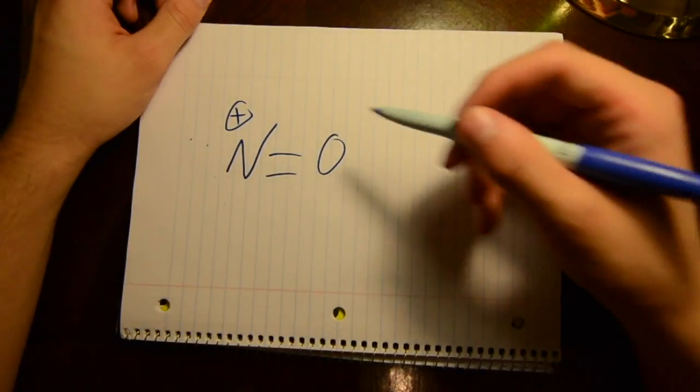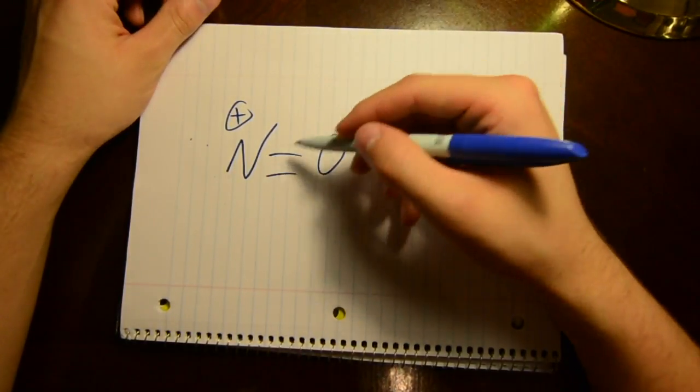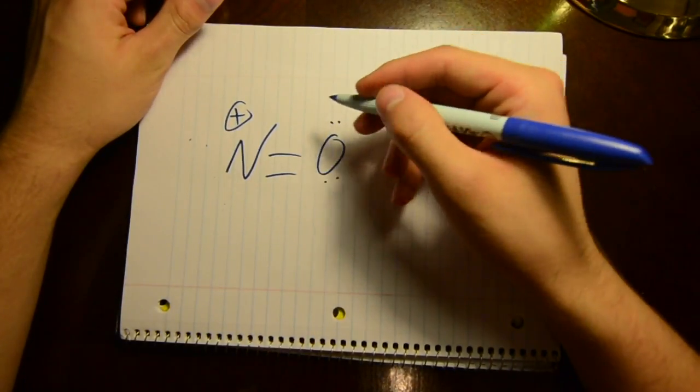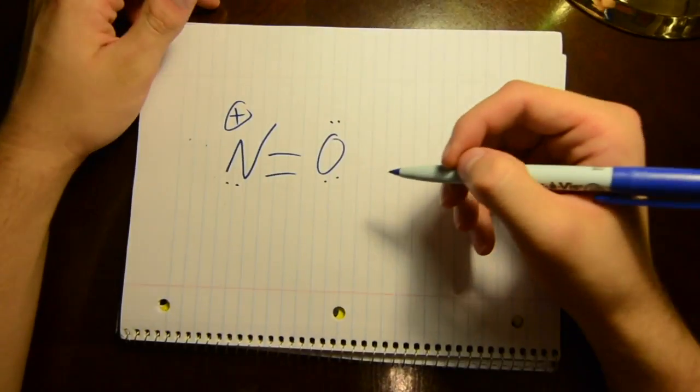Alright, well so in this problem we have a positive charge on the nitrogen and a double bond on oxygen. So oxygen has two extra lone pairs and nitrogen has one lone pair on it.